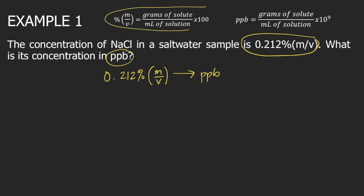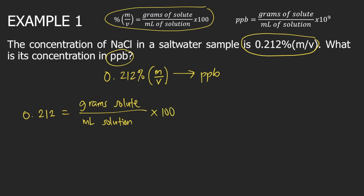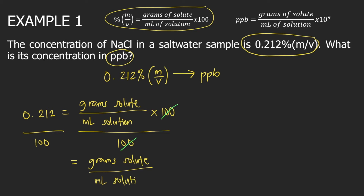First, we will use the formula for mass per volume percent. It says that percent mass per volume — so that's 0.212 — is equal to grams of solute divided by mL of solution times 100. Dividing both sides by 100, the 100 cancels on the right side, leaving grams of solute divided by mL of solution. On the left side, you have 0.212 divided by 100, which equals 0.00212.